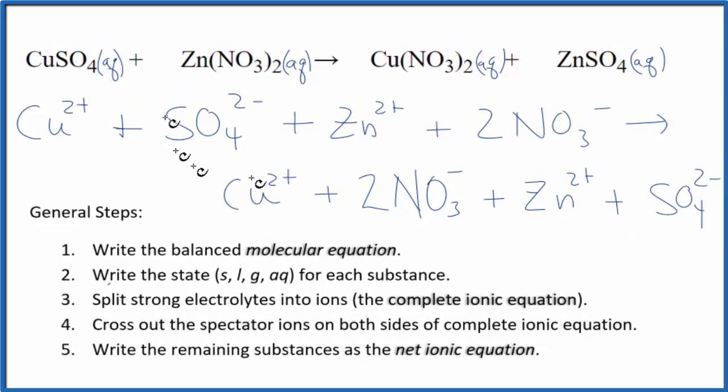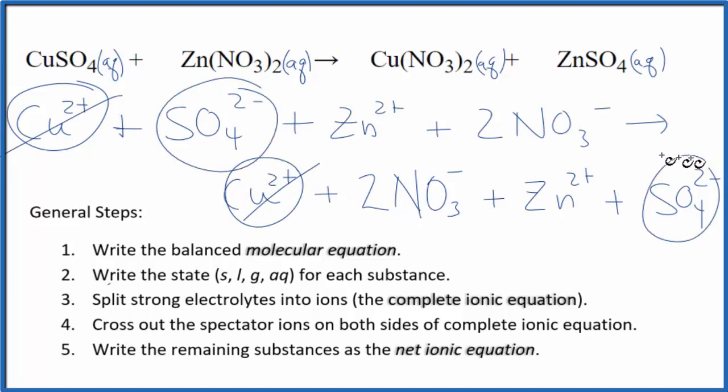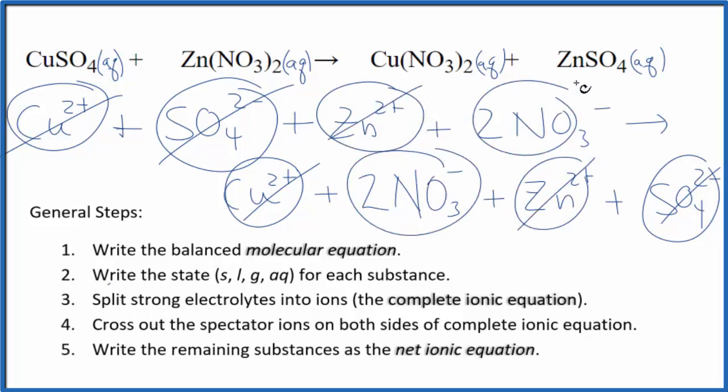In a net ionic equation you're going to cross out the spectator ions that appear on both sides. So when we do that, we have Cu2+ here, Cu2+ here, cross it out. Sulfate here, sulfate here, we cross it out. We have zinc and zinc, we cross it out. We have 2 nitrates and 2 nitrates, we cross it out.